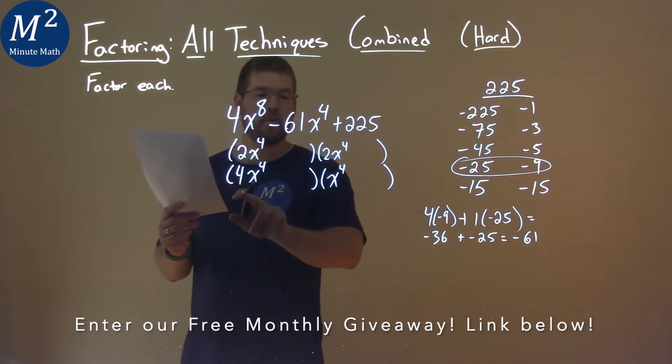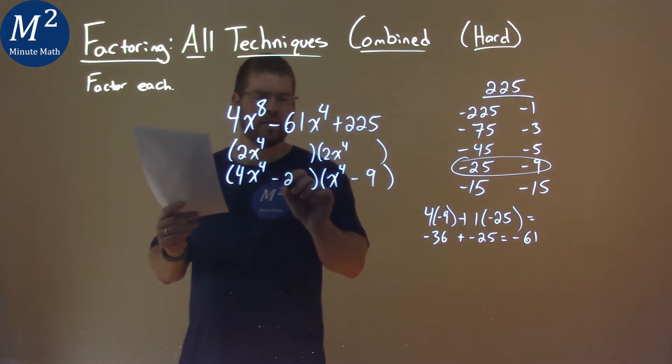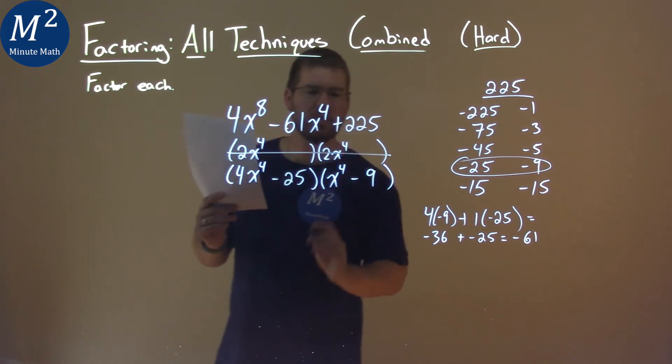Negative 9 gets multiplied by the 4, so we put it on this side here. 25 gets multiplied by the 1 or negative 25. Put that there. So we don't use this first part.